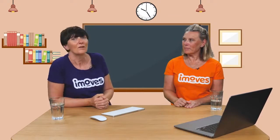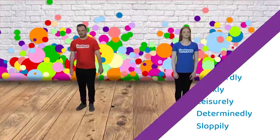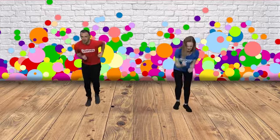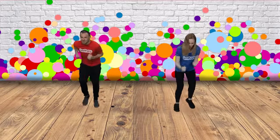Word action games are useful for older students too. Here's one called Agile Adverbs. You have a set of actions and a set of adverbs — you choose one action and one adverb, then do the action in the way of the adverb. For example: running on the spot gracefully. Here are Jack and Morgan demonstrating running on the spot determinedly — there they go.